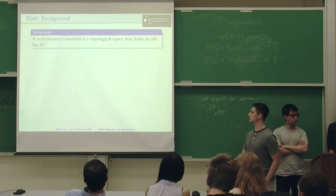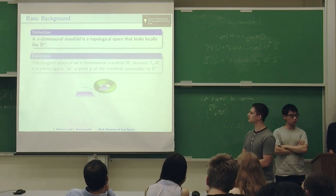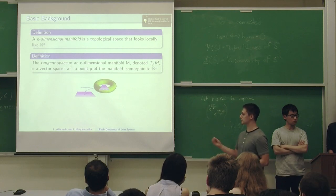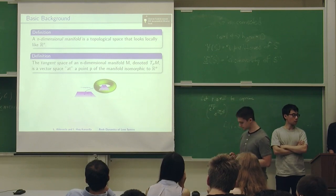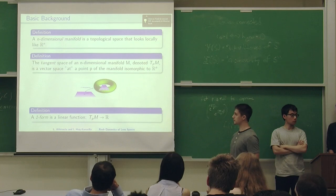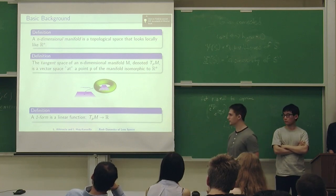Now that we have some motivation, let's talk about some background. An n-dimensional manifold is a topological space that looks locally like Rn. I'm going to go through this really fast because everyone here knows this. The tangent space is an n-dimensional vector space at each point, spanned by the tangent vectors at that point. A one form is a linear function on the tangent space.